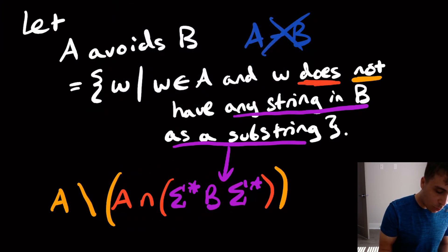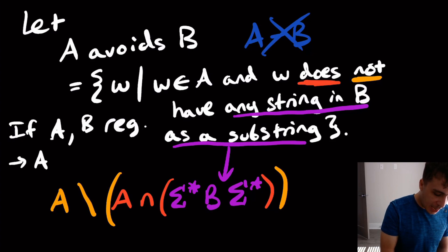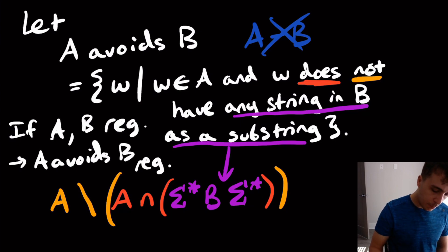Well, the problem that we're trying to solve here is if A and B are regular, show that A avoids B is also regular. So why is this regular?